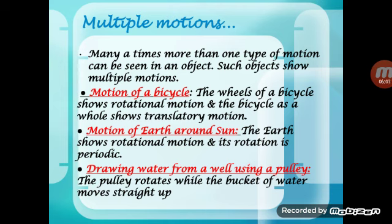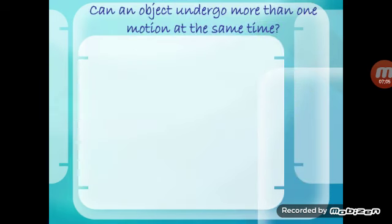Many times, more than one type of motion can be seen in an object — these are called multiple motions. For example, the wheels of a bicycle show rotational motion while the bicycle as a whole shows translatory motion. The Earth undergoes two motions: it revolves around the Sun and also rotates around its own axis, showing both rotational and periodic motion. When drawing water from a well using a pulley, the pulley undergoes circular motion while the bucket moves up in a straight line, showing rectilinear motion.